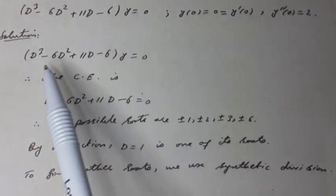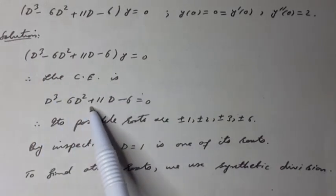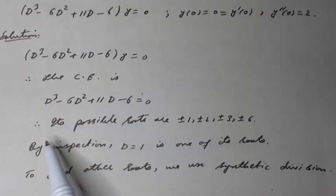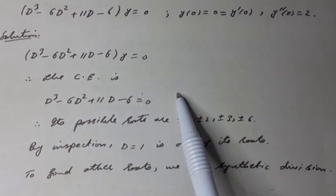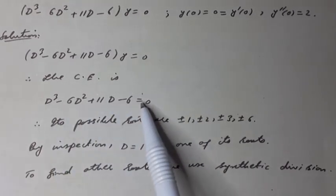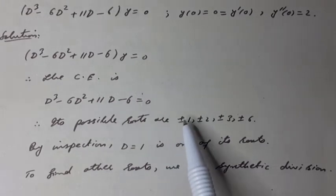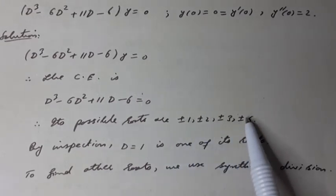The homogeneous linear differential equation is given, and its characteristic equation or auxiliary equation is shown. Therefore, we see that minus 6 multiplied by 1 equal to minus 6, and its divisors are possible roots of this characteristic equation which are plus minus 1, plus minus 2, plus minus 3, plus minus 6.